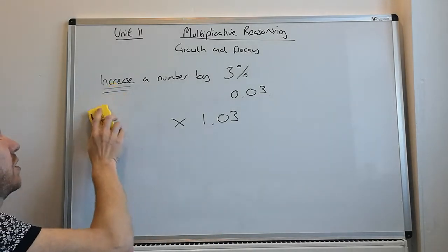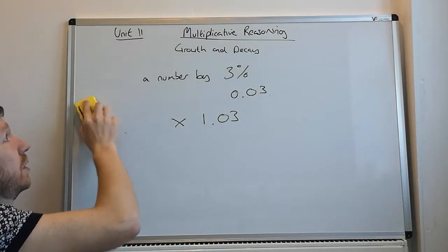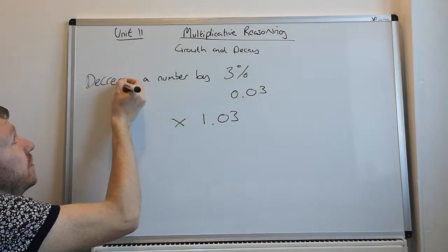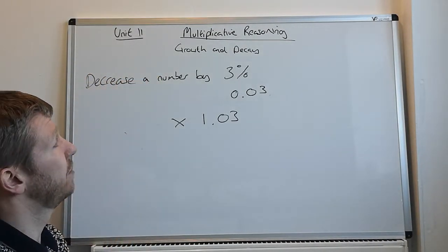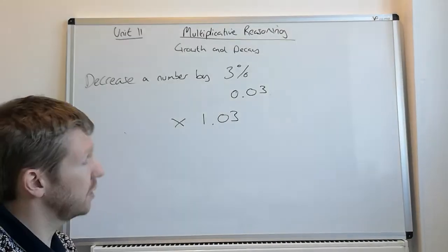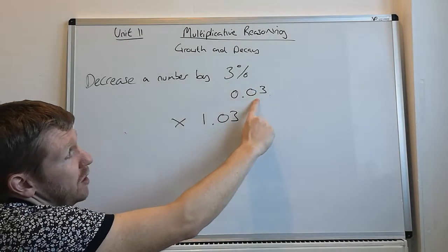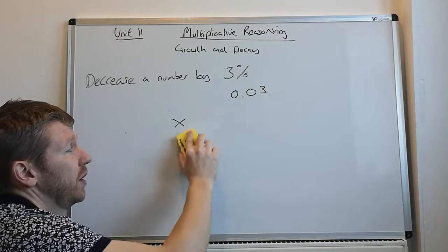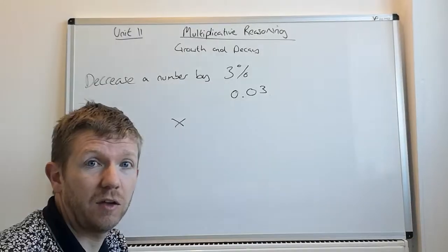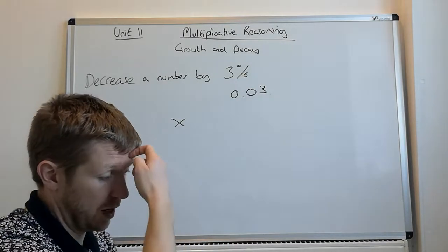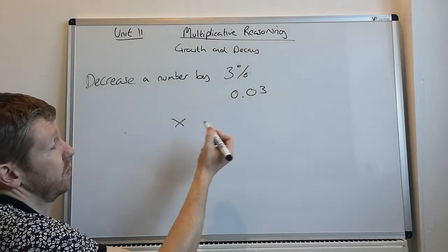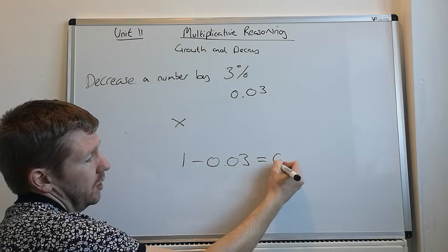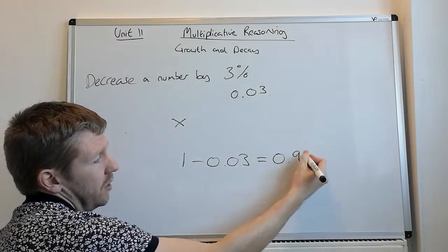Alternatively, if it was an increase, it could be the opposite, which would be decrease a number by 3%. Now, we know that 3% is 0.03, but this time, if we want something to get smaller, then we need to multiply by a number less than 1. What we do is we do 1 minus 0.03, which equals 0.97.